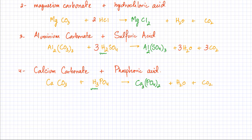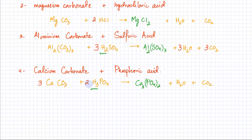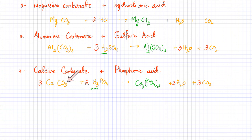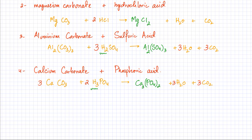Now balance the equation. There are three calciums in Ca₃(PO₄)₂, so there should be three molecules of calcium carbonate. There are two PO₄ ions, so there should be two molecules of H₃PO₄, making six hydrogens and therefore three water molecules. There are three carbonate molecules with one carbon each, so there should be three CO₂ molecules. The oxygen atoms — nine on the left from carbonate, eight from phosphoric acid giving seventeen total — match six plus three plus eight on the right, confirming balance.